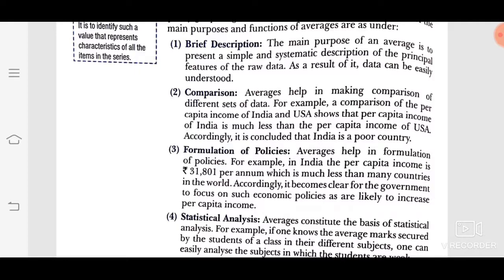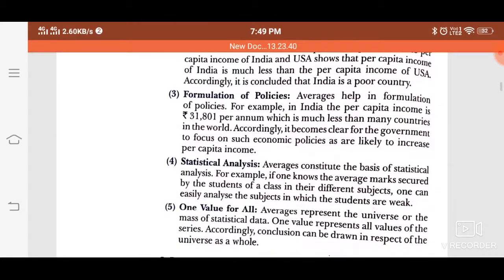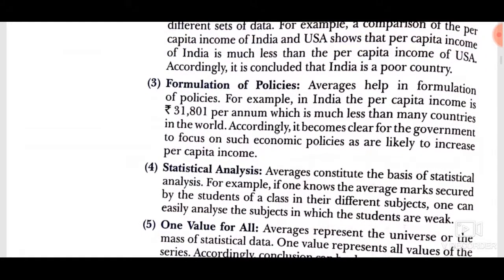Third: formulation of policies. Averages help in the formulation of policies. For example, in India, per capita income is 31,801 per annum, which is much less than many countries in the world. Accordingly, it becomes clear for the government to focus on such economic policies as are likely to increase per capita income. So what will we do with finance ministers? We will generate policies to increase people's income so the country can improve the economy.